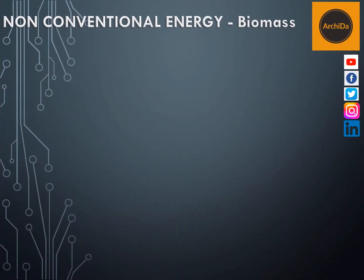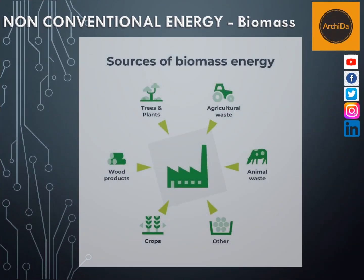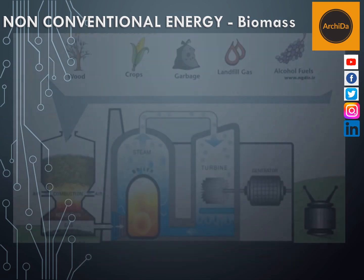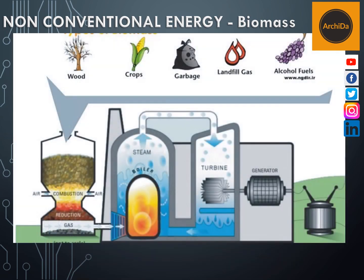The next variation of a non-conventional energy source is called the biomass system. Biomass uses the energy generated or produced by living or once-living organisms. It is processed in a silo wherein the gas produced there will be used to run the boiler system to come up with steam.